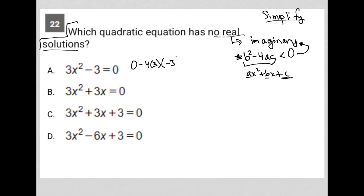Let's put that in: negative 3. Negative 4 times 3 is negative 12, times negative 3 is positive 36. Positive 36 is greater than zero, so that's not imaginary. Choice A is gone.